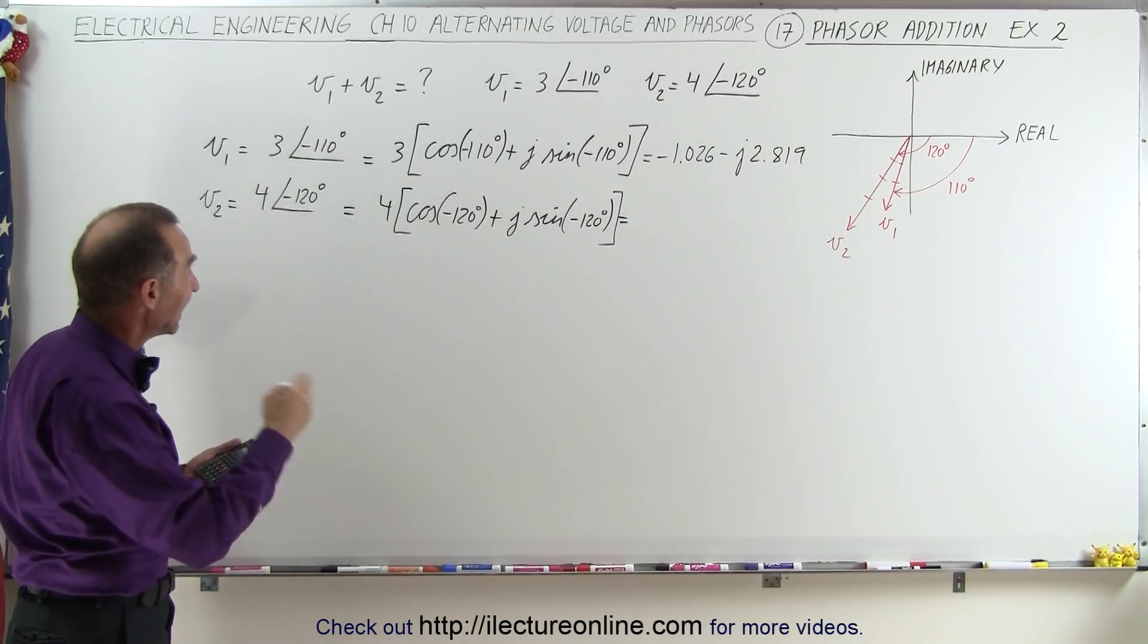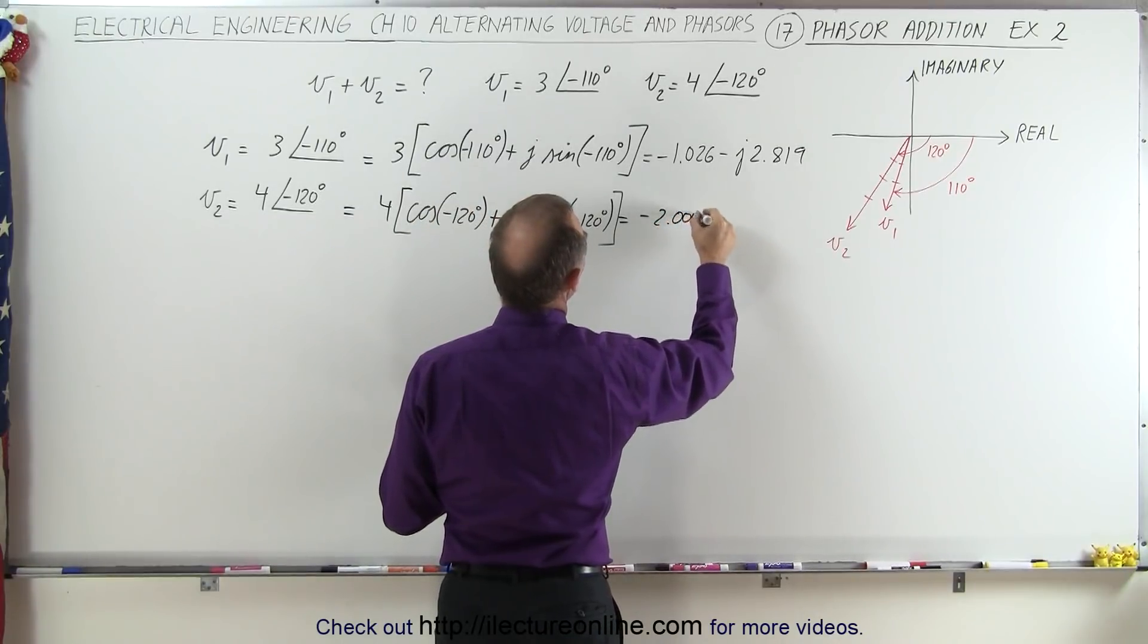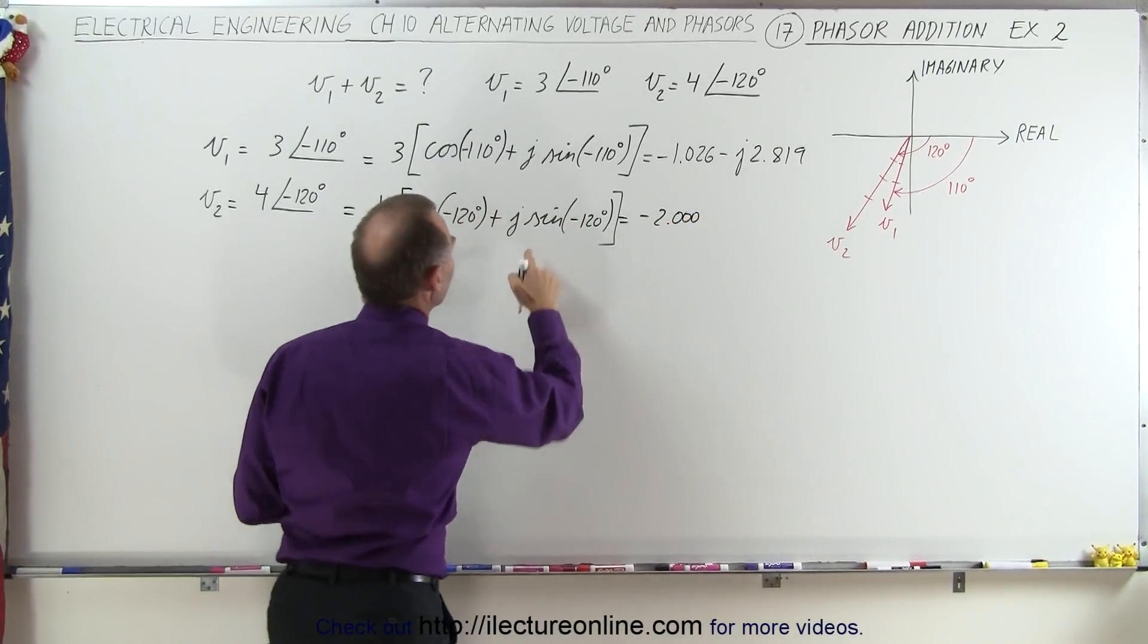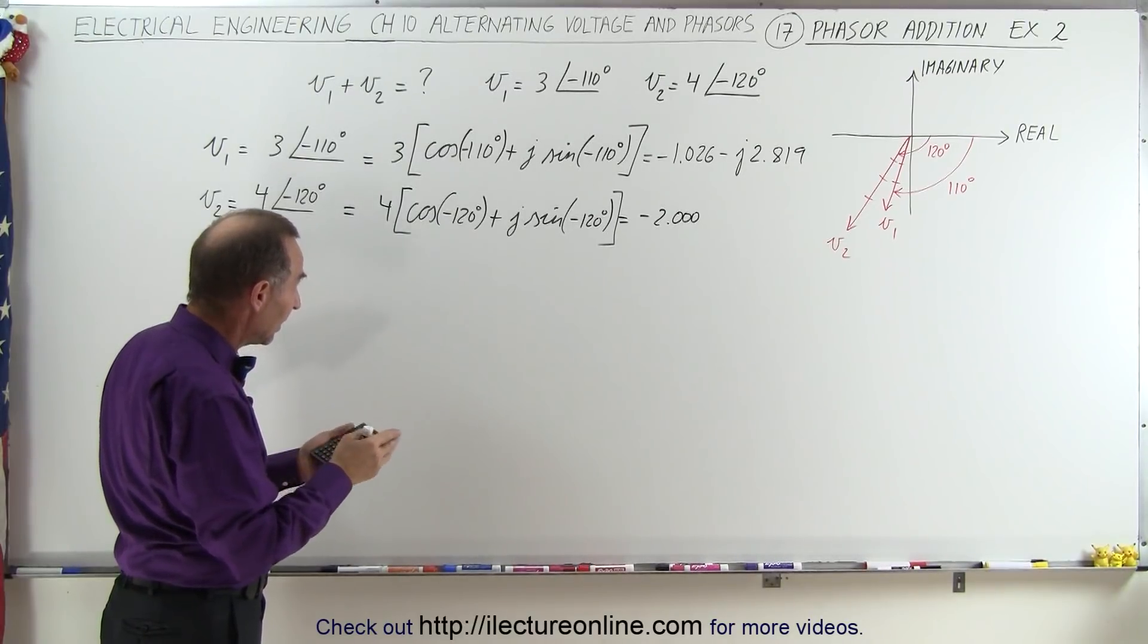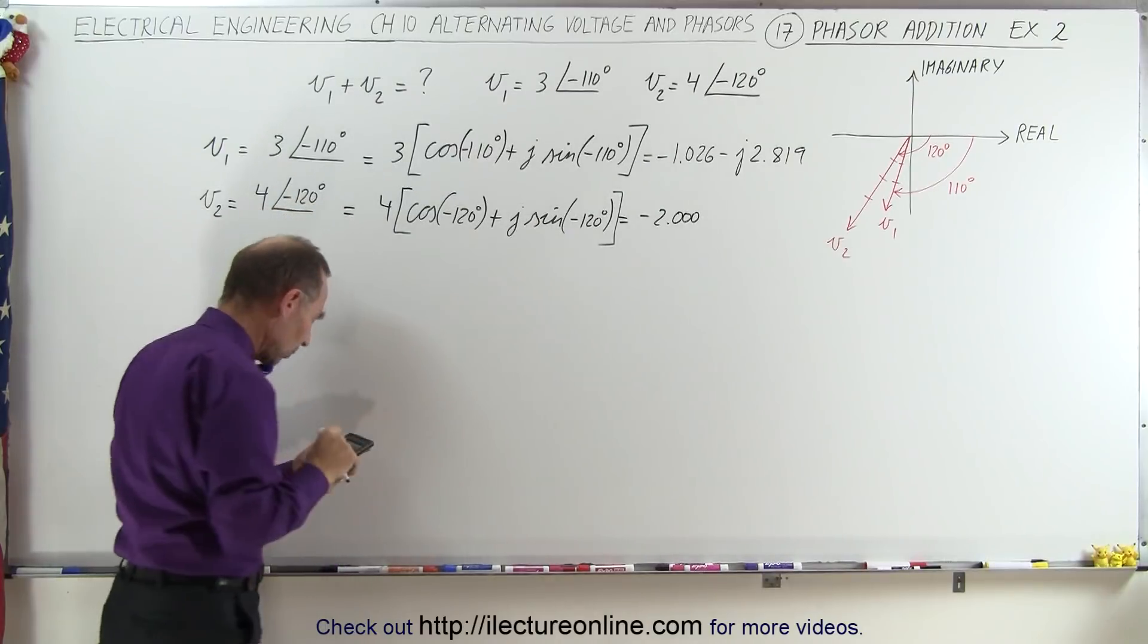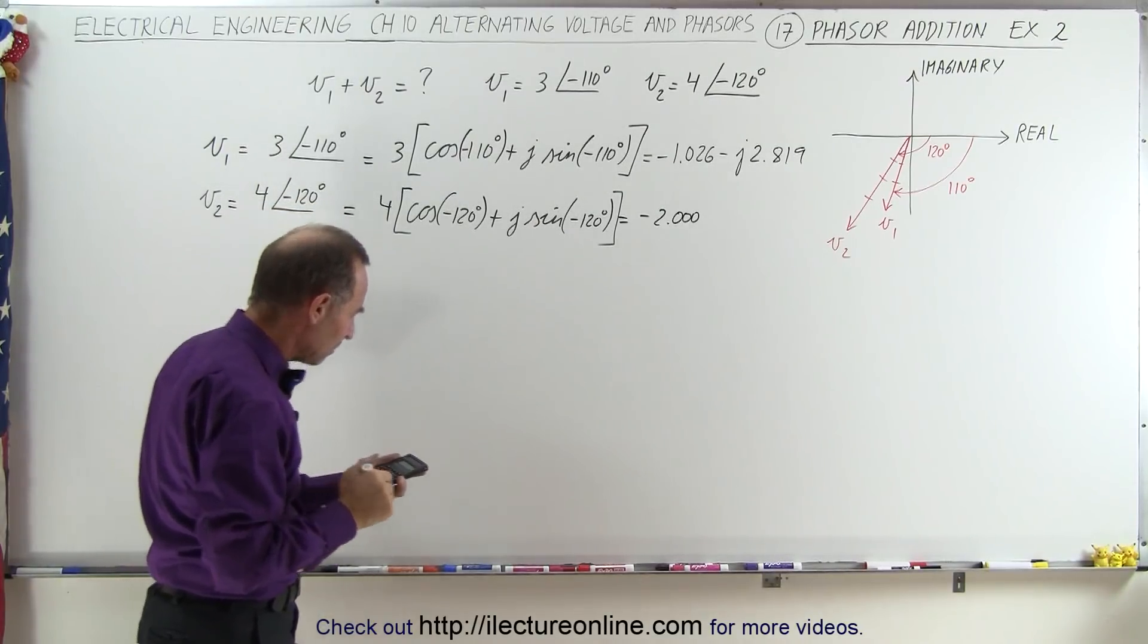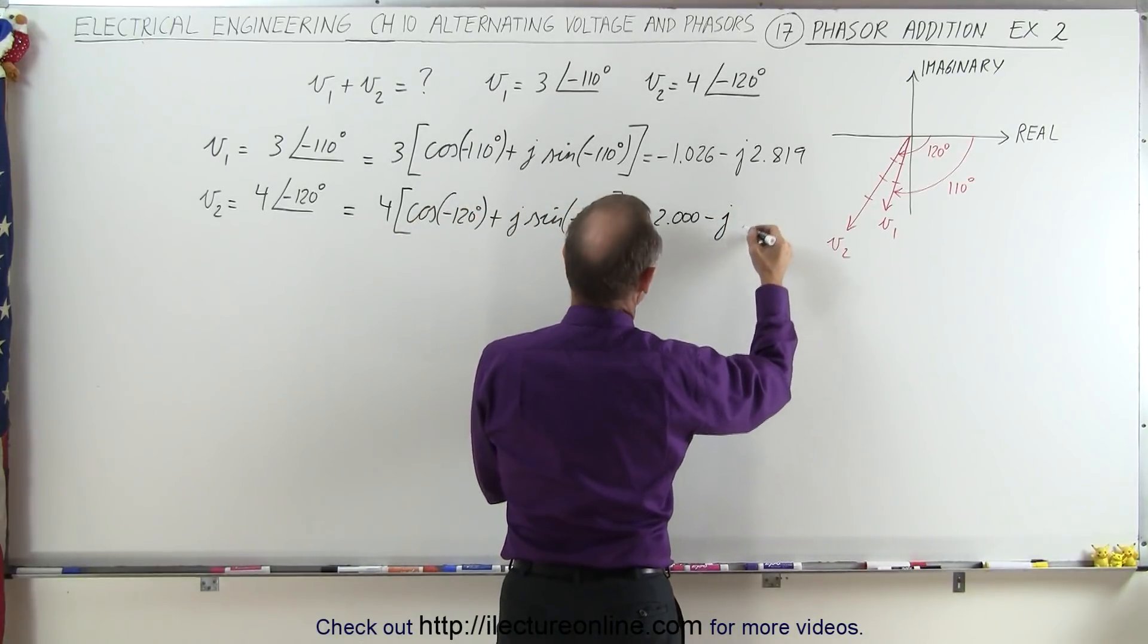And then on the second part here, we take the sine of 120, we make that negative because that's equal to negative the sine of a positive 120 degrees, and times 4, we get minus j times 3.464.